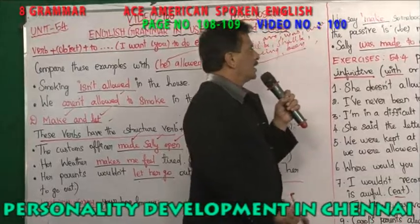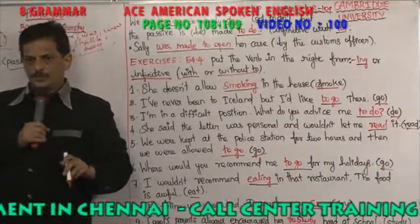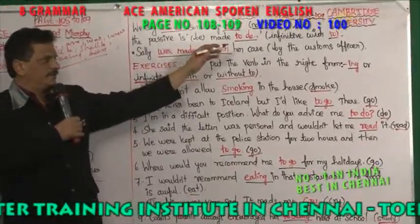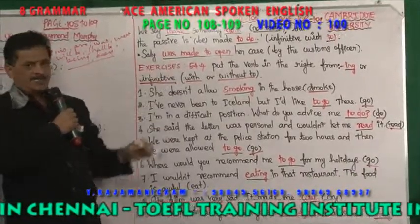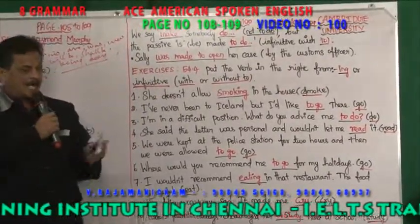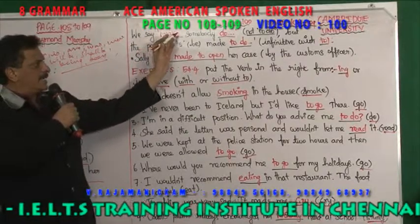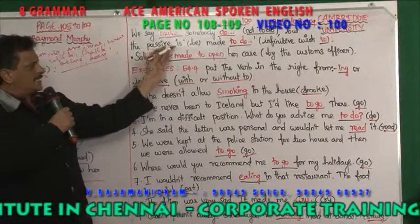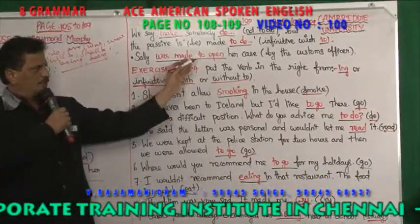We say 'make somebody do' — not 'to do'. But in the passive, it is 'be made to do' — infinitive with 'to'. For example: 'Sally was made to open her case.' So in active voice you use make without 'to', but in passive voice you use 'was made to open' — 'to' plus present tense verb.